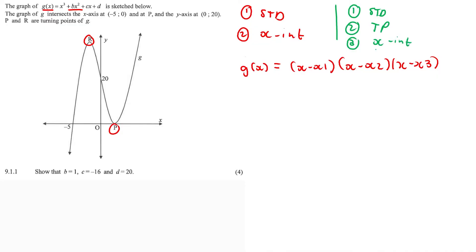With your parabola, there are just two x-intercepts. With our cubic function, there are three in theory. But we do get circumstances where a cubic function only has two x-intercepts, and we call that a repeated factor. So when a graph turns on the x-axis, we call that a repeated factor.